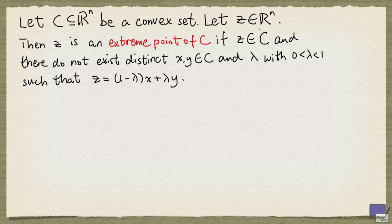Let z be a point in R^n. We say that z is an extreme point of C if z is an element of C, and there do not exist distinct x and y in C, and a lambda between 0 and 1, such that z can be written as (1-λ)x + λy.